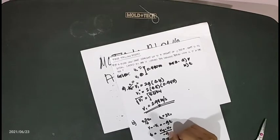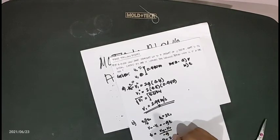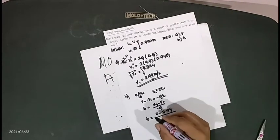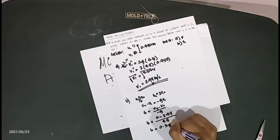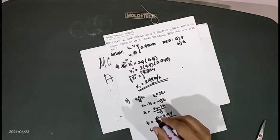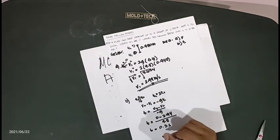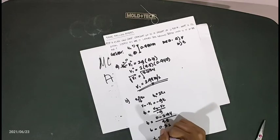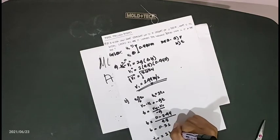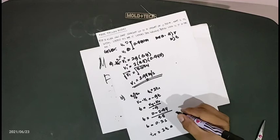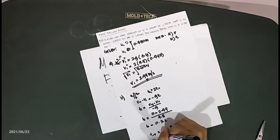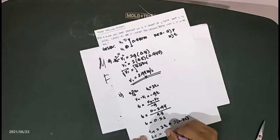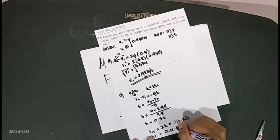The time going up is T equals (0 minus 2.94) over 9.8, so T equals 0.3 seconds. Since the time going up equals the time coming down, the total travel time T total equals 2 times 0.3 seconds, which equals 0.6 seconds.